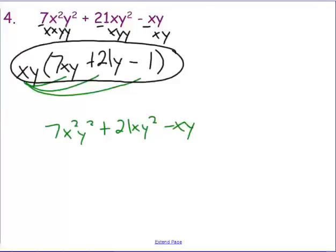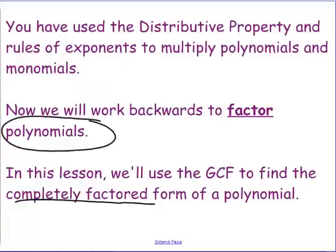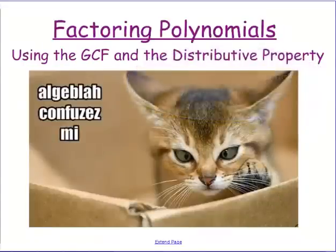So again, the basic idea is finding the greatest common factor, writing each term as a product of the greatest common factor and whatever else you'd have, then factoring that greatest common factor out using the distributive property backwards. We will definitely work on this more in class on Monday, but watching this over the weekend would be a terrific help so you don't end up cross-eyed and confused. Have a good weekend, guys.